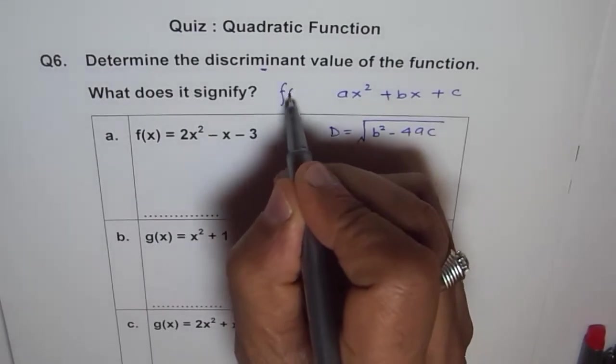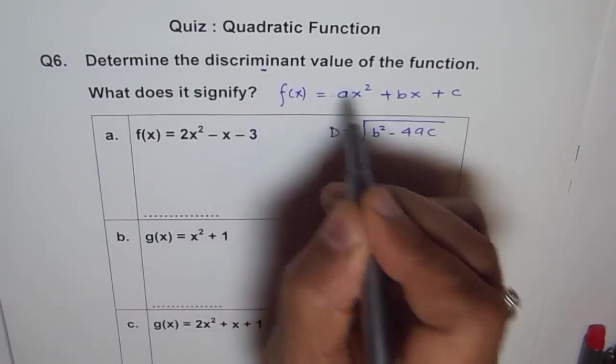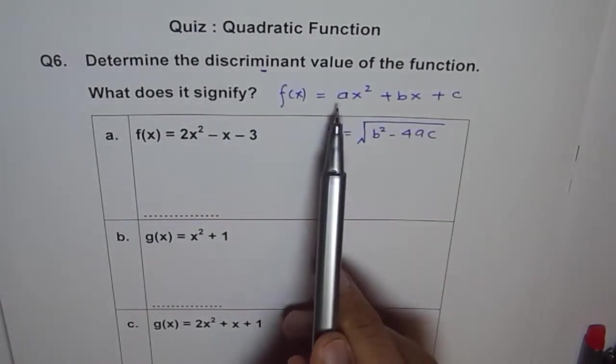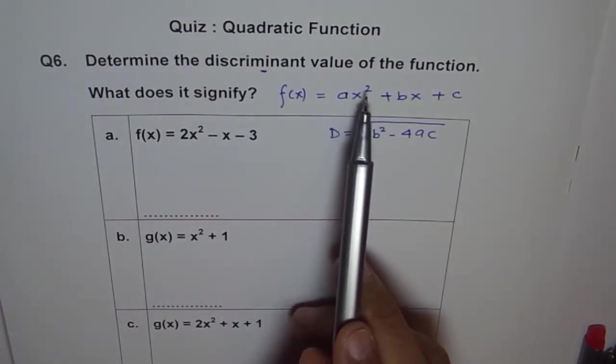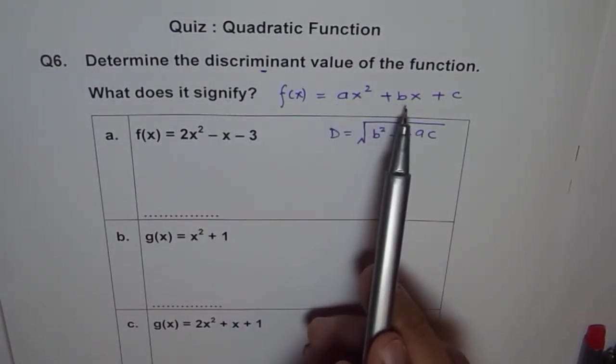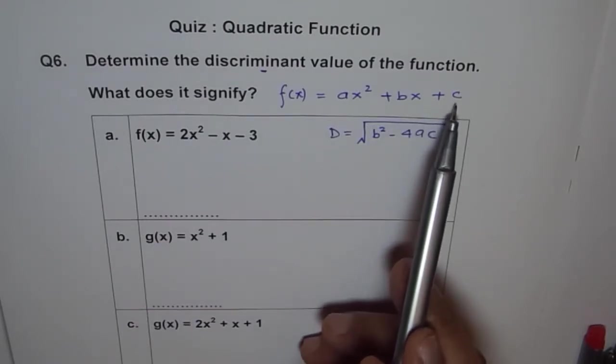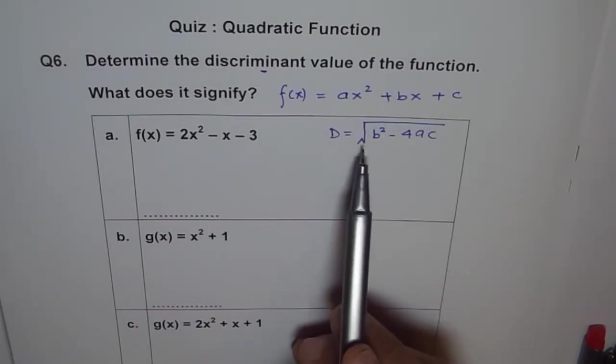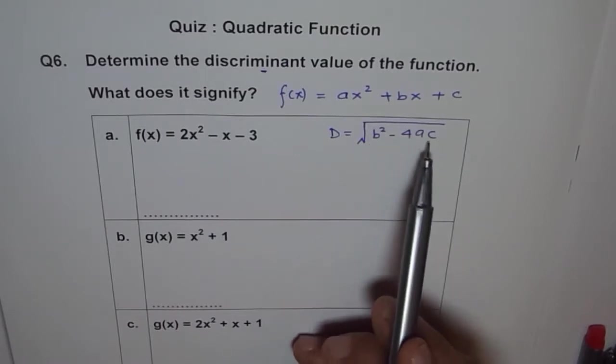For any quadratic function f(x) equals this, a is the coefficient of the x² term (the leading coefficient), b is the coefficient of x, and c is the constant term. So discriminant D equals b² - 4ac.